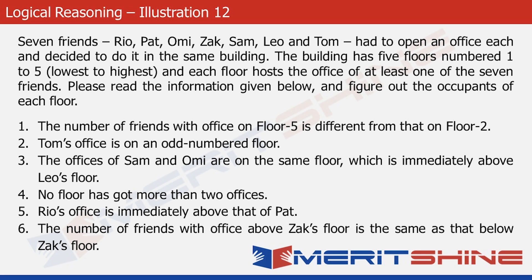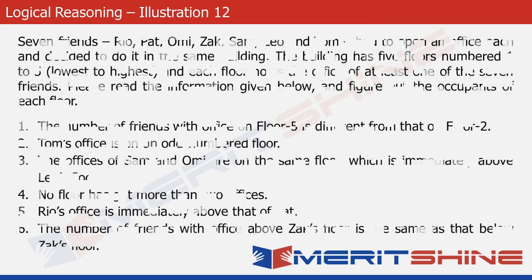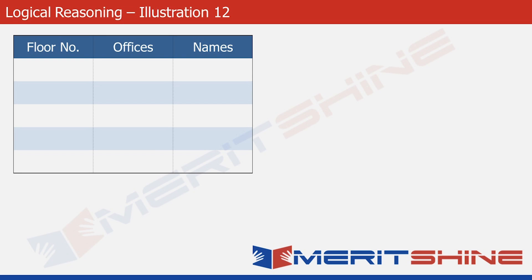Let's try and solve the question now. The first step of solving this problem would be to make a table like this. As you can see, it has got 3 columns. The first is floor numbers, the second is the number of offices on a particular floor, and the third is the names of the persons who have got offices on a particular floor. To start with, let's quickly fill up this first column, which is floor numbers.